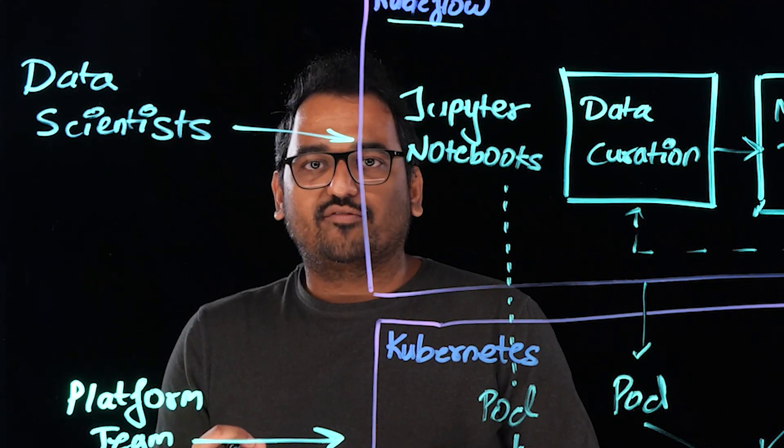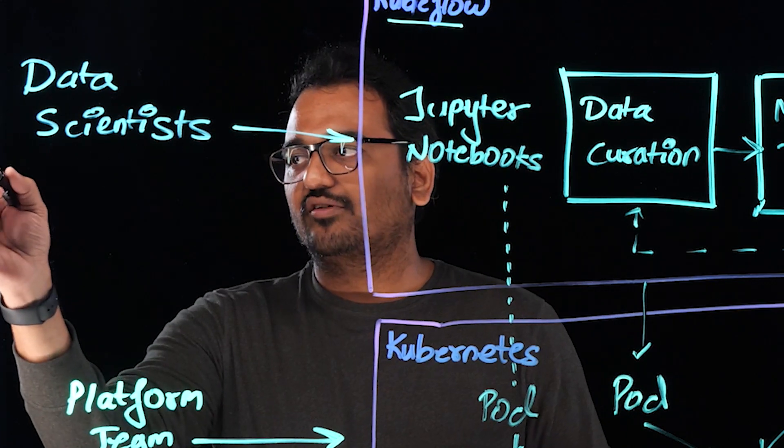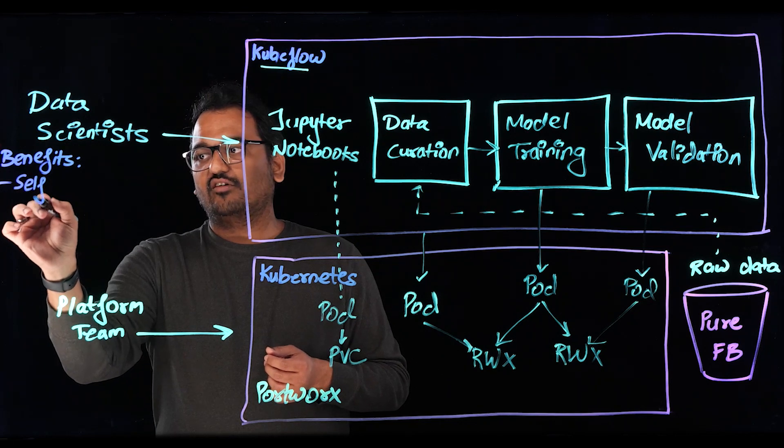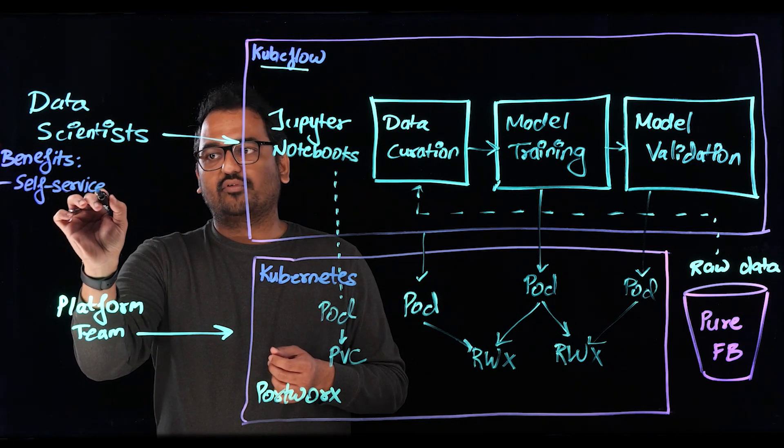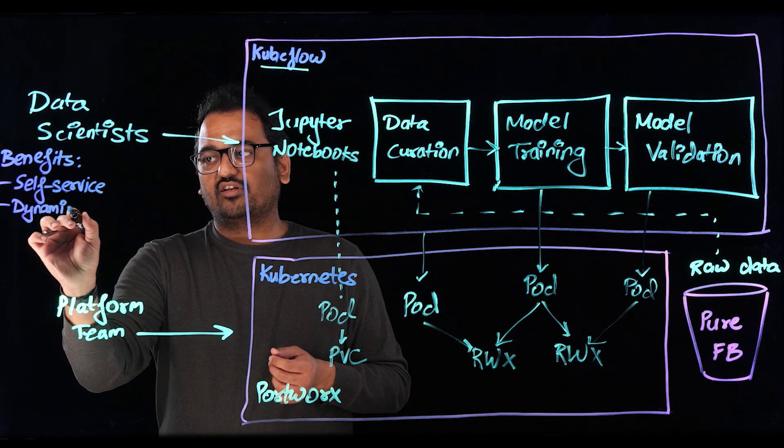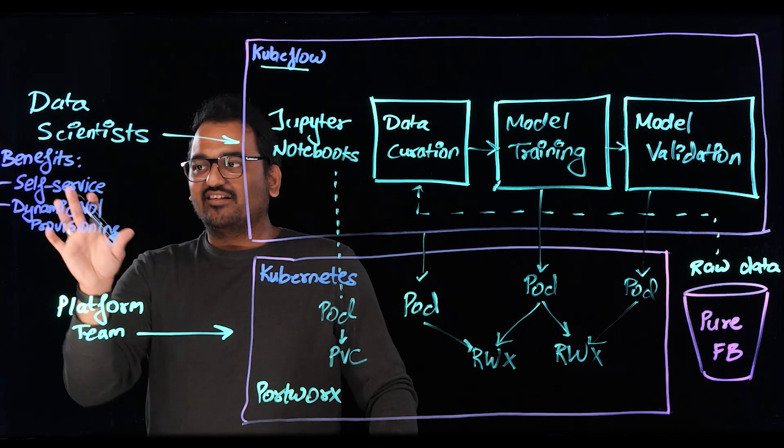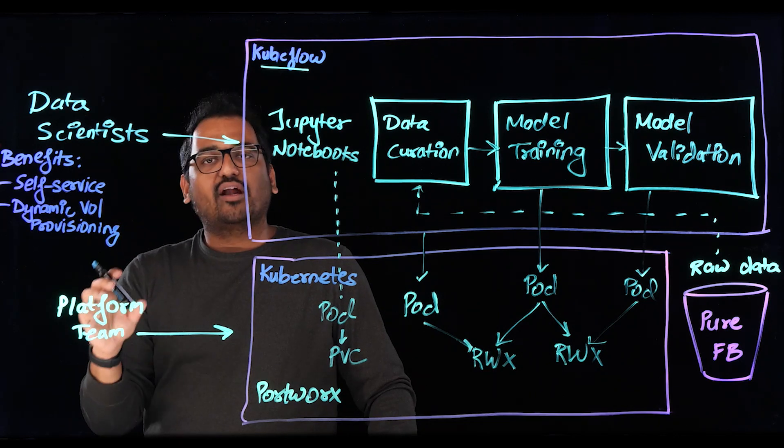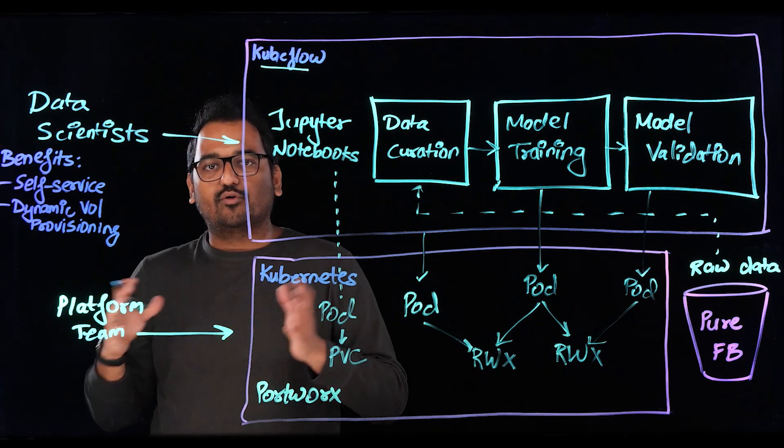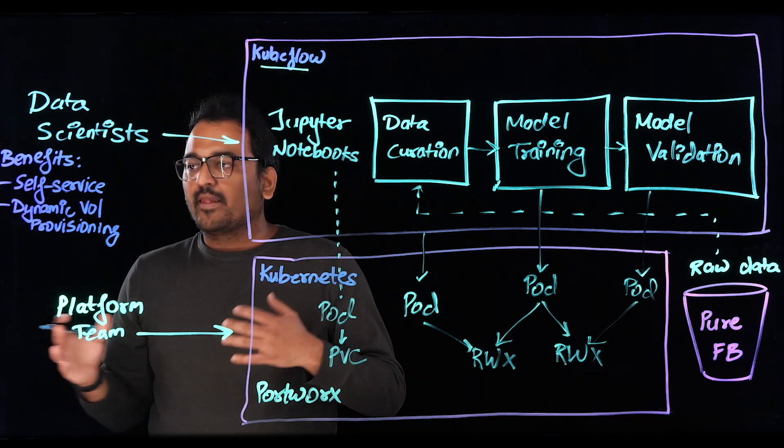What are some of the benefits of using tools like Kubeflow and solutions like Portworx for building these machine learning pipelines? The biggest benefits that we saw were self-service, so data scientists don't have to worry about opening up tickets. The dynamic volume provisioning that Portworx brings to the table. And whenever Portworx provisions a volume, it automatically follows the policies that are set by administrators. So the administrators don't have to worry about going back and modifying some things on an individual volume level.